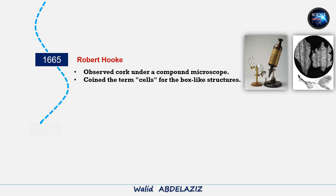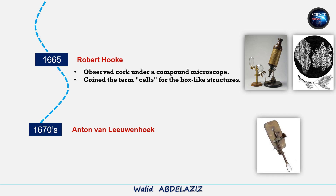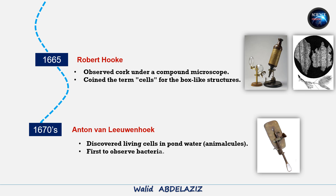A few years later, in the 1670s, Anton van Leeuwenhoek took cell study further. Using a more powerful microscope he built himself, he observed living cells in pond water. He called these moving organisms animalcules, and he was also the first to observe bacteria.